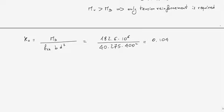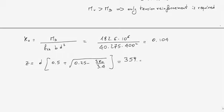Now that I know K₀, I can calculate the value of z, where z equals d times [0.5 plus the square root of (0.25 minus 3K₀/3.4)]. This equals 359.2mm.